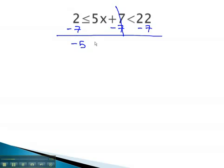This gives us negative 5 is less than or equal to 5x, which is less than 15. To isolate x, we divide all three sides by 5.